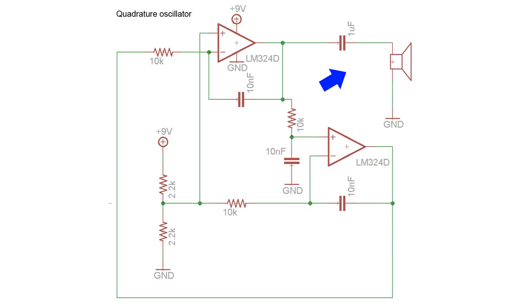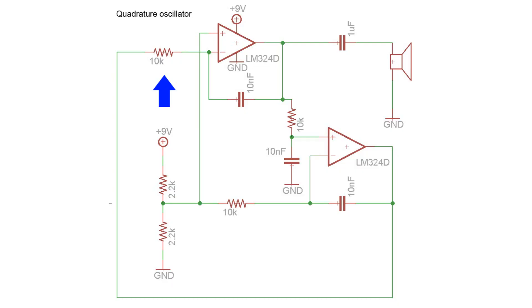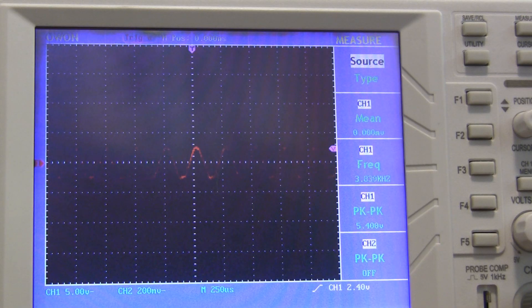If I use a capacitor to remove the DC offset of the sine wave and connect it to some earphones, I can hear the 1500 hertz tone. If I replace this fixed resistor with a variable resistor, I can change the frequency of the oscillations, letting me do fun stuff like this.